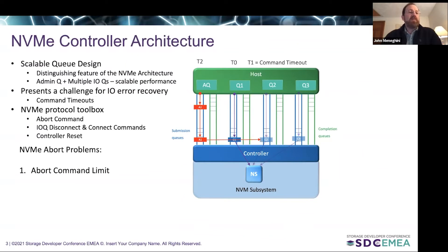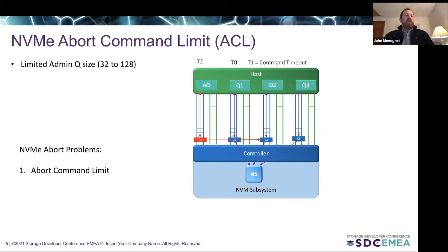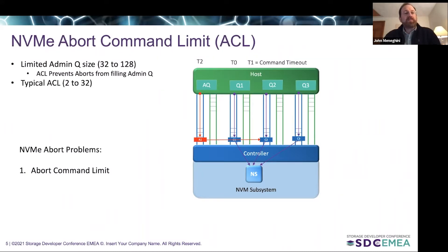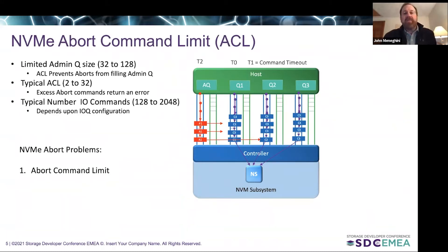We'll start with the abort command limit. The NVMe specification allows the controller to actually limit the number of abort commands that can be submitted to the controller at any point in time. If the host does not obey this limit, the controller can fail the abort commands with an error status. Most admin queues have a limited admin queue size, typically between 32 and 128 queue slots. The ACL prevents aborts from filling the admin queue. A typical ACL is between 2 and 32 commands. This allows the host to abort a few commands, but if the limit is ever exceeded, the host will simply return that excess abort command with an error. This really has a negative impact on abort performance and scale.